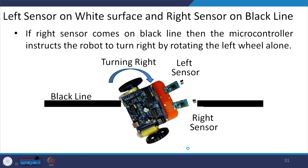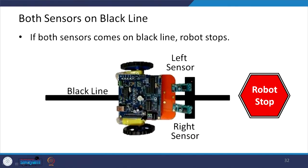Third condition: the left sensor is on the white surface while the right sensor comes onto the black line. This means the robot has drifted left, so the microcontroller instructs the robot to turn right by activating the left wheel motor alone. Fourth condition: if both sensors are on the black line, the robot stops.